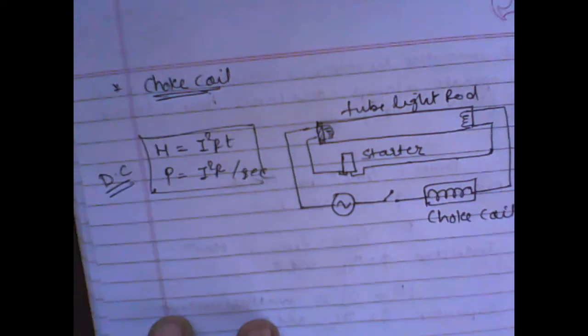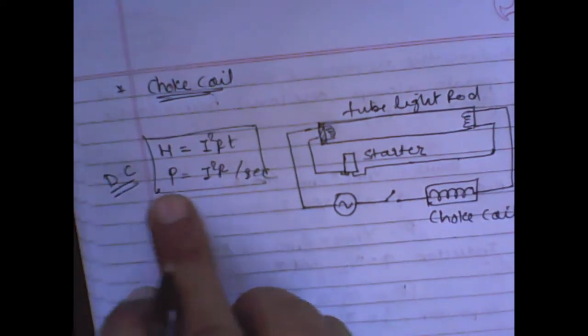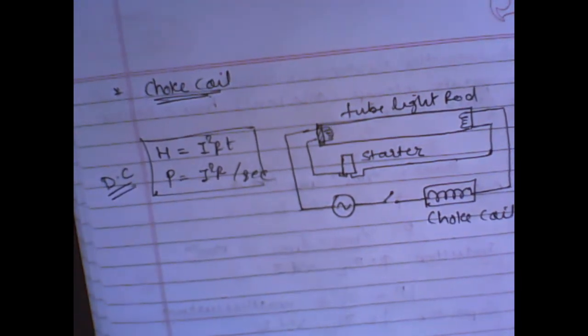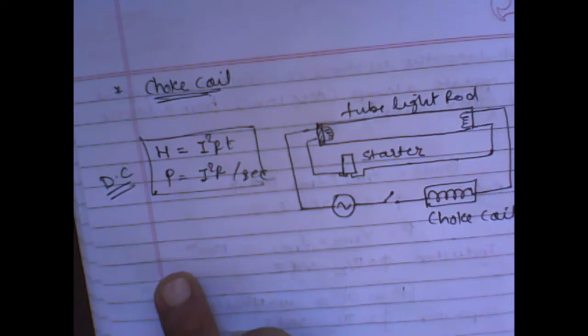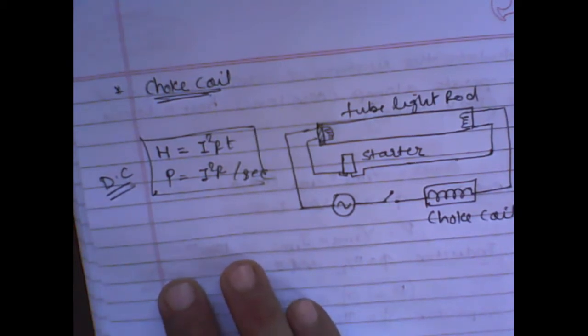When we use a DC circuit, we use a resistor, the power dissipated is I²R per second. But in AC circuit, the current can be reduced by choke coil, which involves a very small amount of loss of energy.